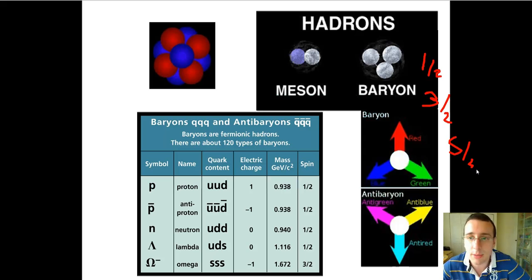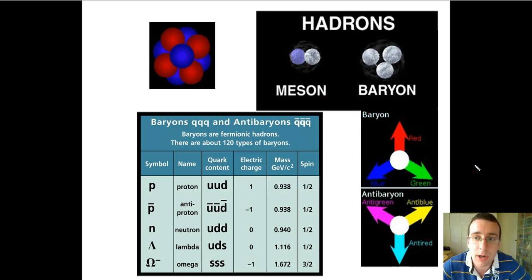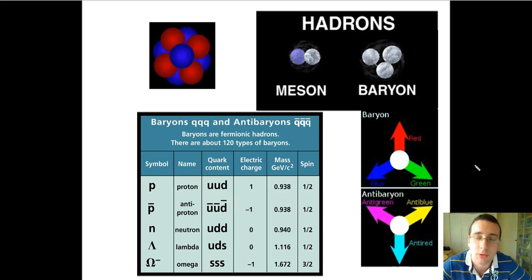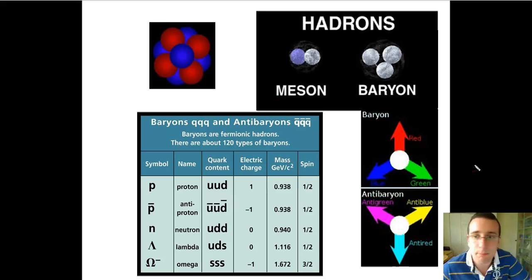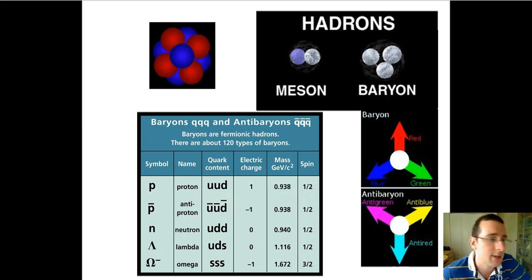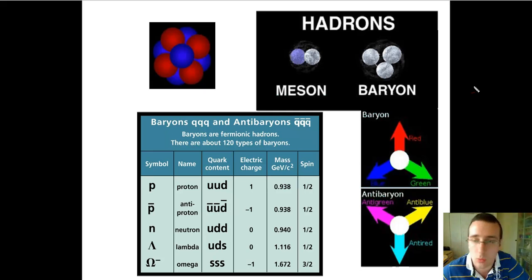Which means they are subject to the exclusion principle — these particles cannot be occupying the same quantum state that other particles are already occupying. In other words, they cannot be in the same place and time that other particles are. The mesons are going to be paired, and some scientists say that there are mesons out there which have four, six, or eight paired-up quarks.